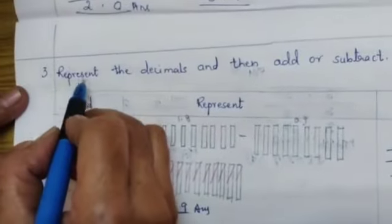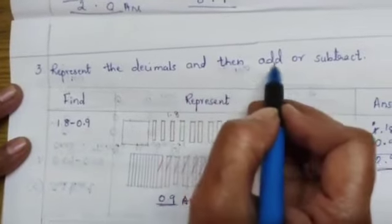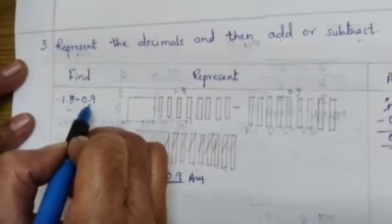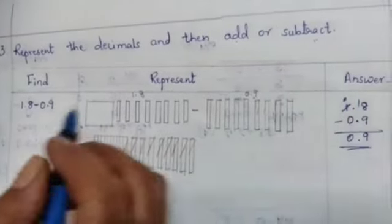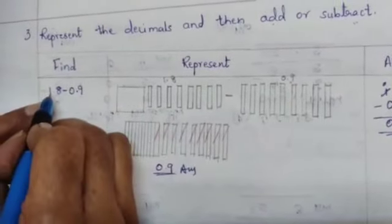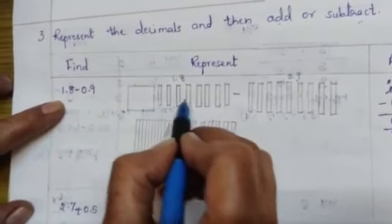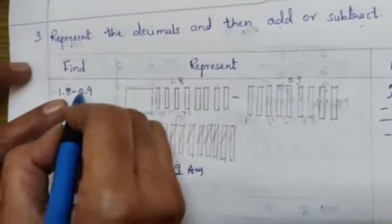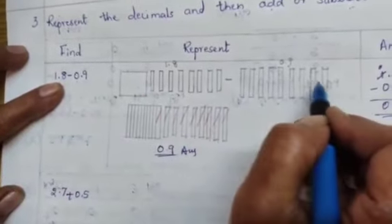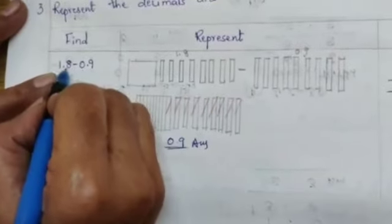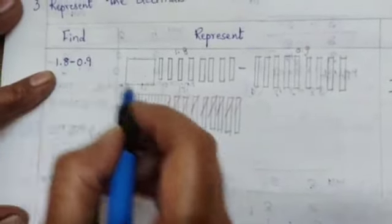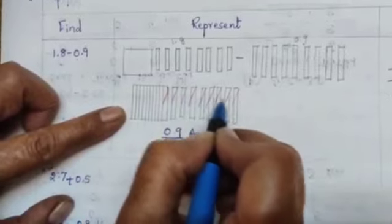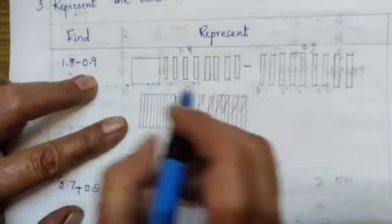Now third bit. Represent the decimals and then add or subtract. First find 1.8 minus 0.9. Represent answer. See children you have to draw blocks here. 1 whole 8 strips, 1 whole 8 strips. Minus 0.9. In whole place no, nothing is there. So 0.9 strips you have to draw. Then you have to subtract children. 1.8 minus 0.9. See this is 1.8, 1 whole till you have 1 whole 8 sticks. How many you have to cut? 9 sticks you have to cut.